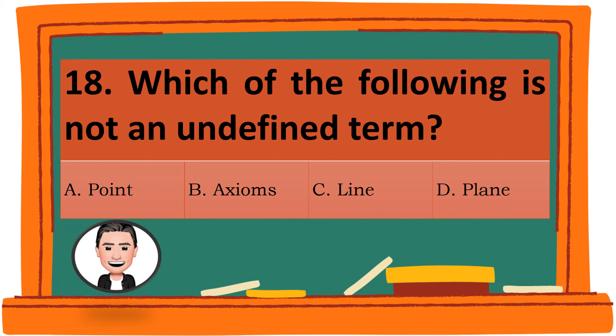Question 18. Which of the following is not an undefined term? A. Point. B. Axiom. C. Line. D. Plane. The correct answer is B. Axioms.